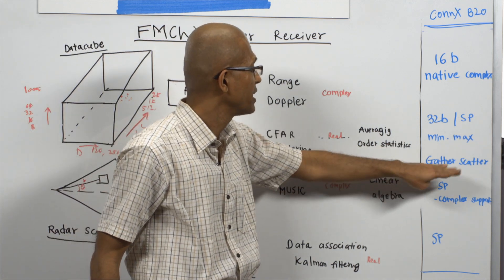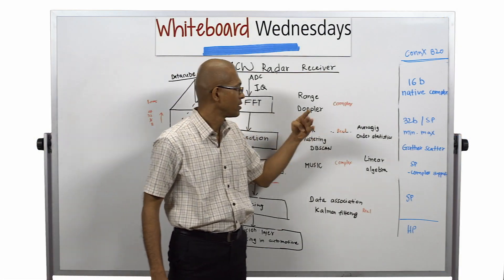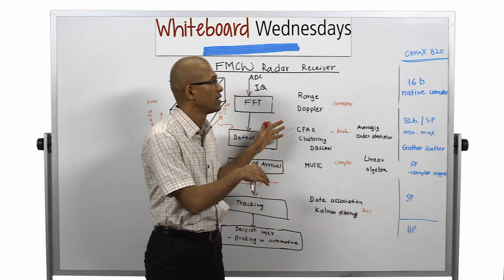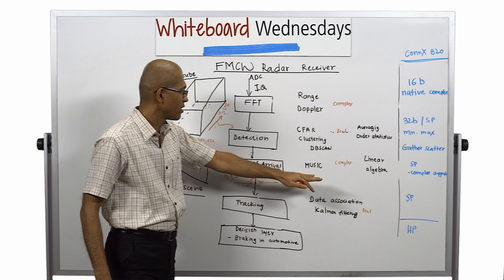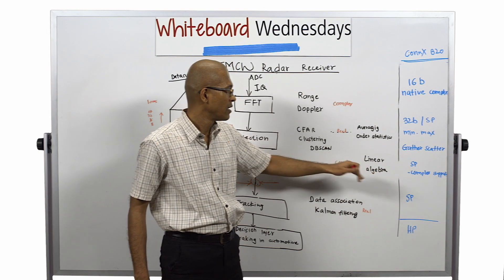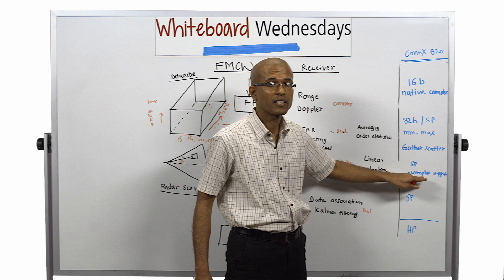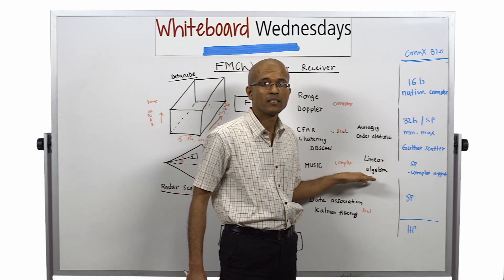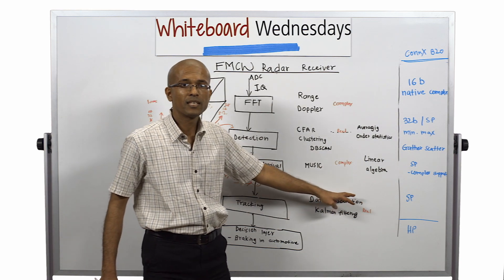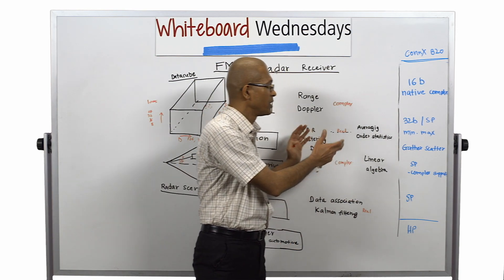The B20 DSP also has a gather-scatter engine, which means that for clustering algorithms, non-contiguous data can be loaded and stored in memory, and vector processing can be done on the B20 DSP much more efficiently. For angle-of-arrival, where the data is complex and high-precision linear algebra processing is needed, the B20 DSP provides complex support for single-precision data. It also provides accelerations for linear algebra and matrix inversion operations. For Kalman filtering and tracking, single-precision data processing is important, and B20 DSP supports that as well.